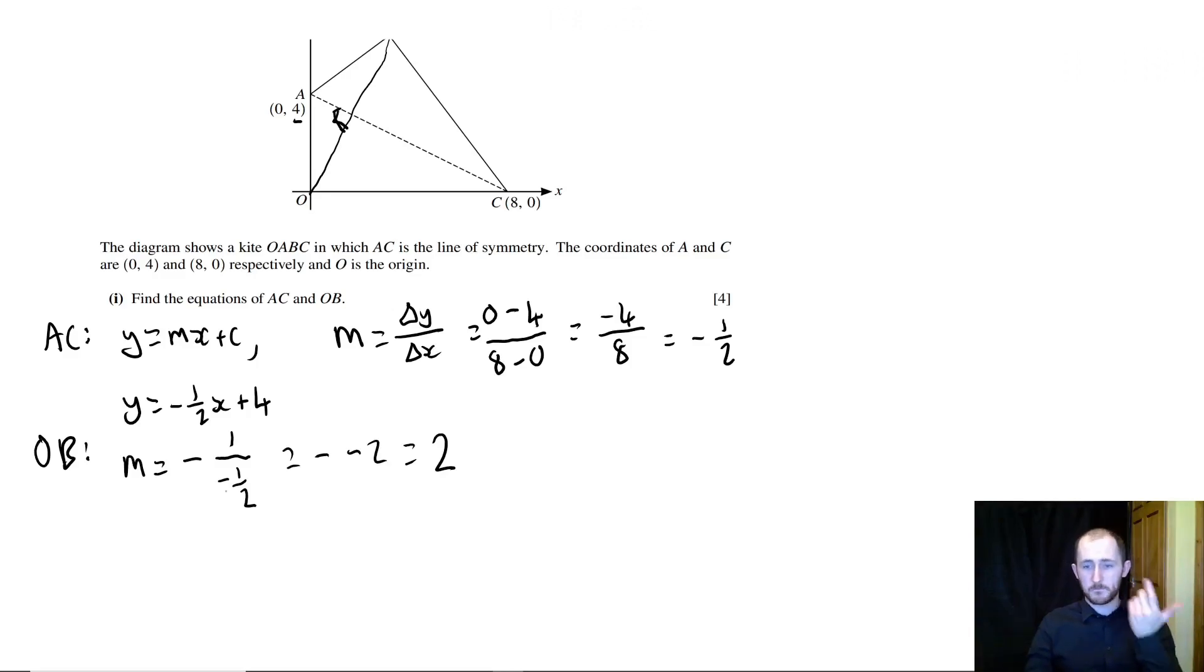So you might hear it's called the negative reciprocal, or the inverse reciprocal, whatever you want to call it, it's all the same thing. All you need to do is do minus 1 over the gradient to find the perpendicular gradient. So now we have that y equals 2x, and the y-intercept goes through the origin, so it's 0. So we just have y equals 2x.